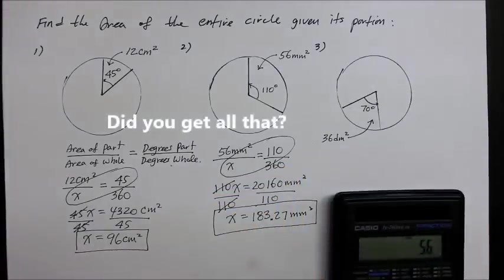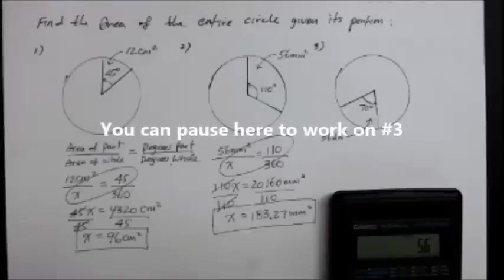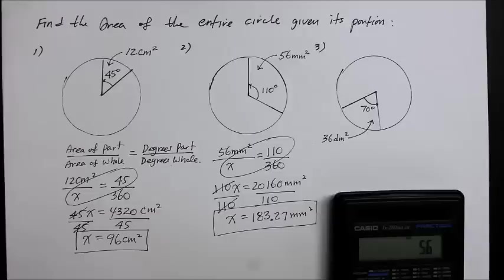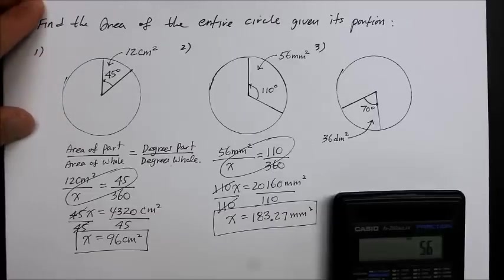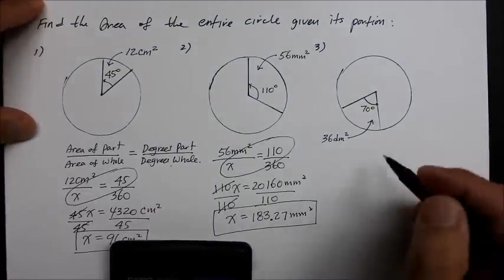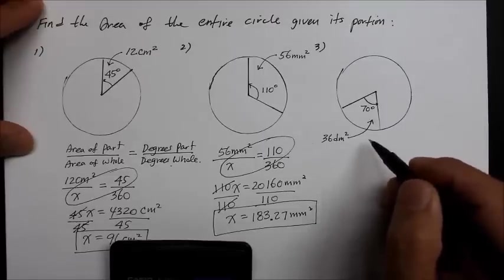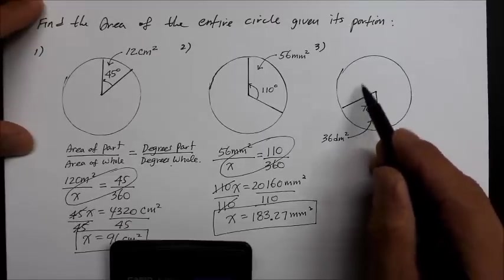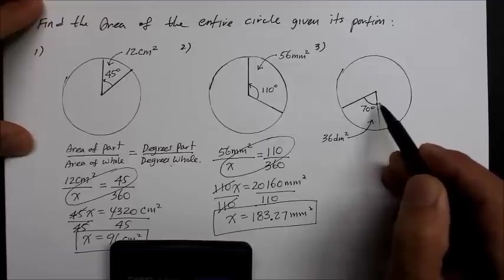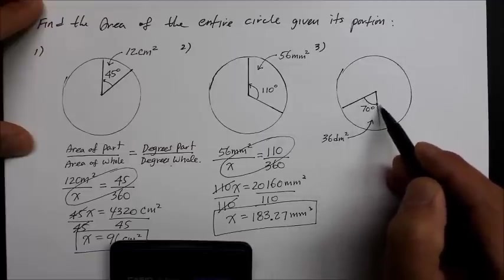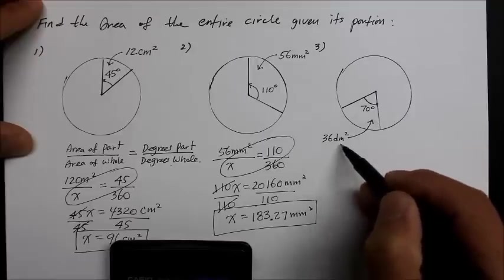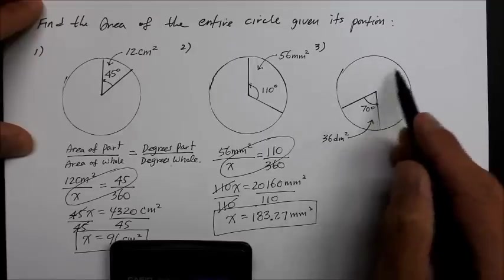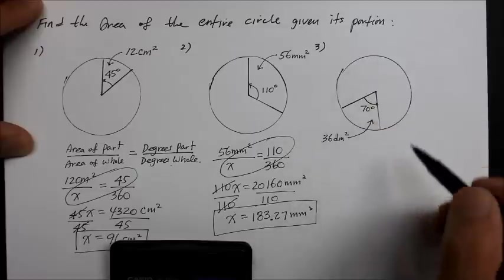And then number three. All right. So, how did that go? Starting to make sense now? Let's hope that I get what you got, okay? So, if out of the entire 360 degrees, we're only occupying 70 degrees, which is only 36 decimeters squares out of the entire thing, then what is the entire thing is the question.